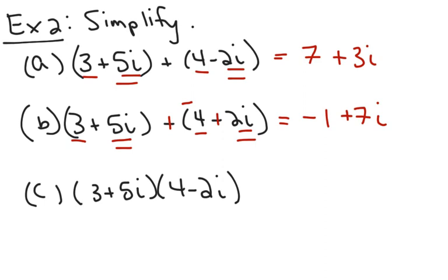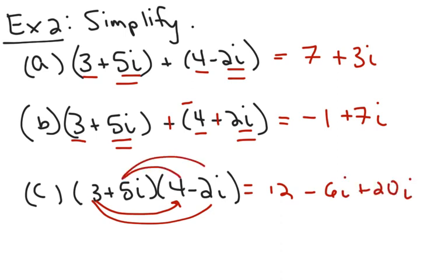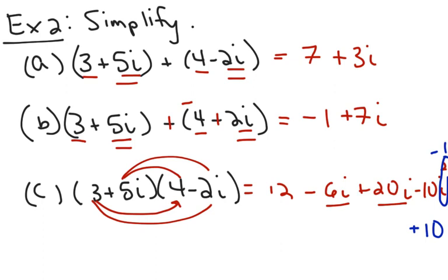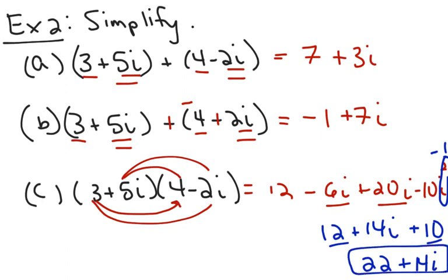Multiplication is where you may want to utilize your graphing calculator more. However, multiplying is just using FOIL — first, outside, inside, last. The middle terms are like terms. At the end, we defined i squared as negative 1, so the last term becomes positive 10 because it's really negative 10 times negative 1. Negative 6i plus 20i gives you 14i, and then you add the real components to get 22 plus 14i. You will get the exact same answer if you do it in the calculator.